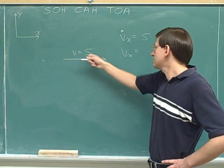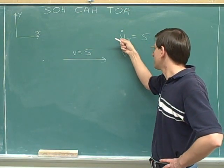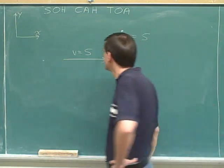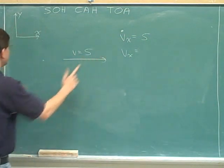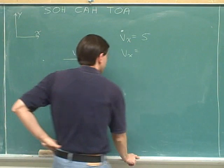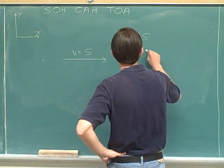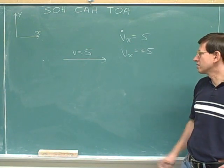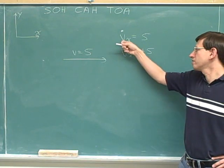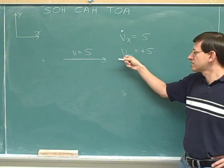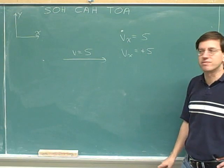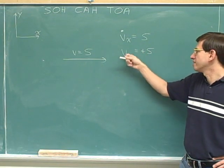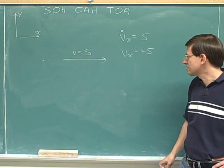This just told us the magnitude of the x-component. Now let's figure out the sign. This vector is pointing to the right, and to the right is our positive direction. So here are two true things we can write: the magnitude of the x-component is 5, and the signed x-component is positive 5.